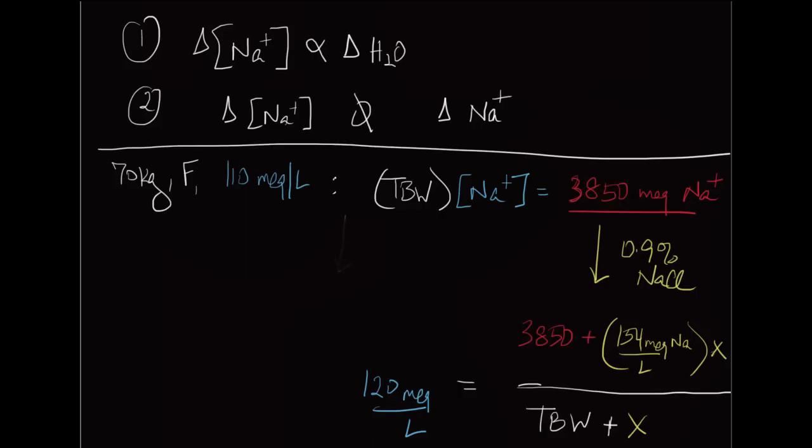So I've done this math for you already. And what you end up getting for x is approximately 10.3 liters. So this patient who's seizing is going to need 10.3 liters of normal saline administered to her if you want to bring her concentration from 110 to 120.